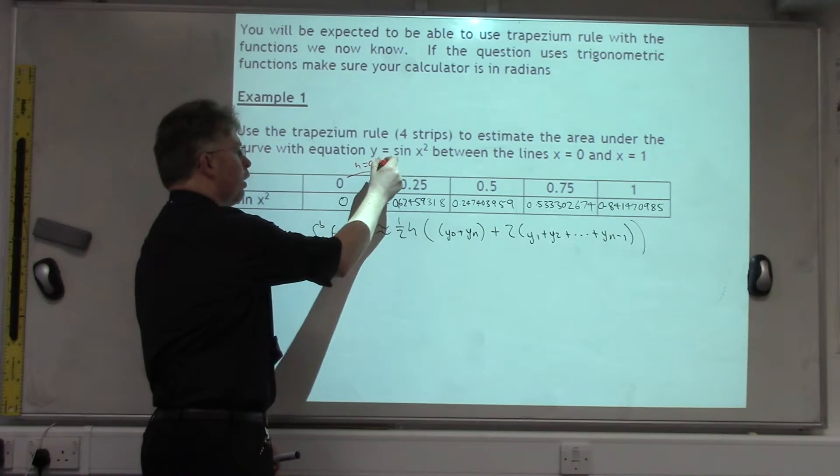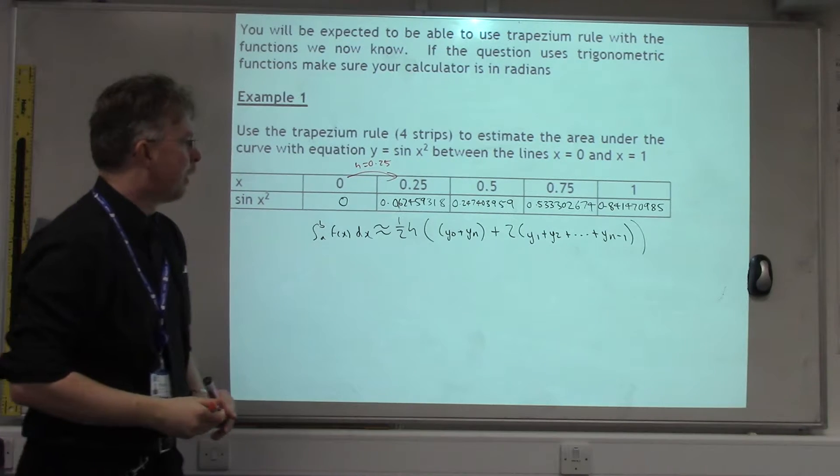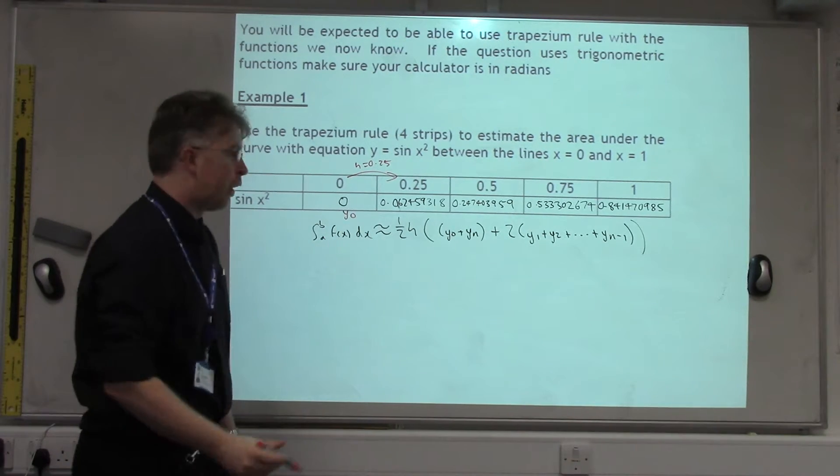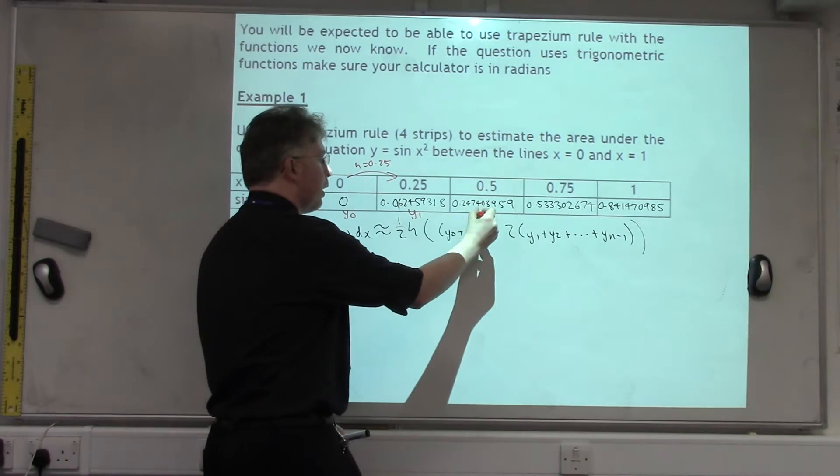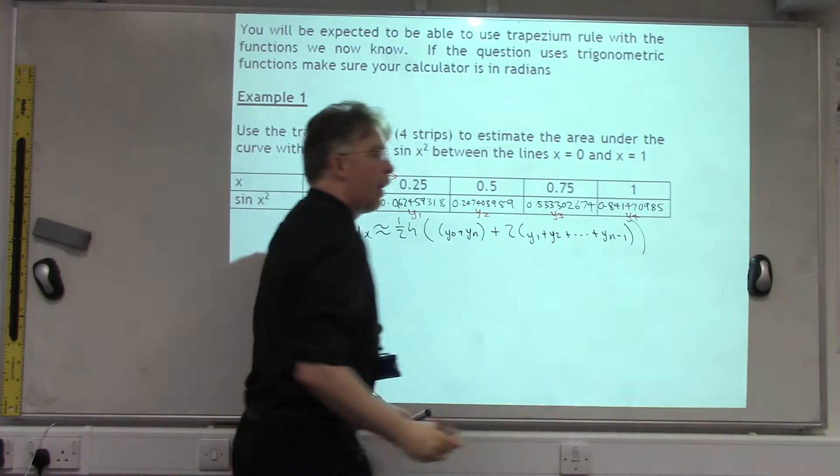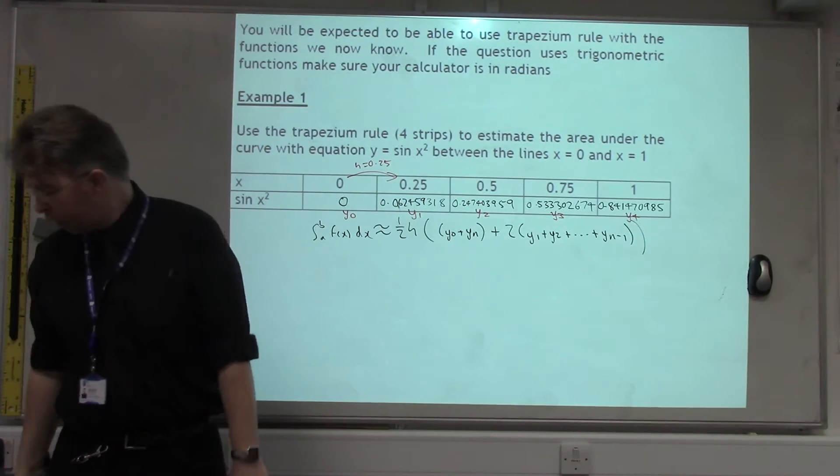Now, the h is the distance between the x values. So in this case, the h is 0.25. The y0 is the first y-coordinate, and y1, y2, y3, y4, and n would be 4 in this case for 4 strips.